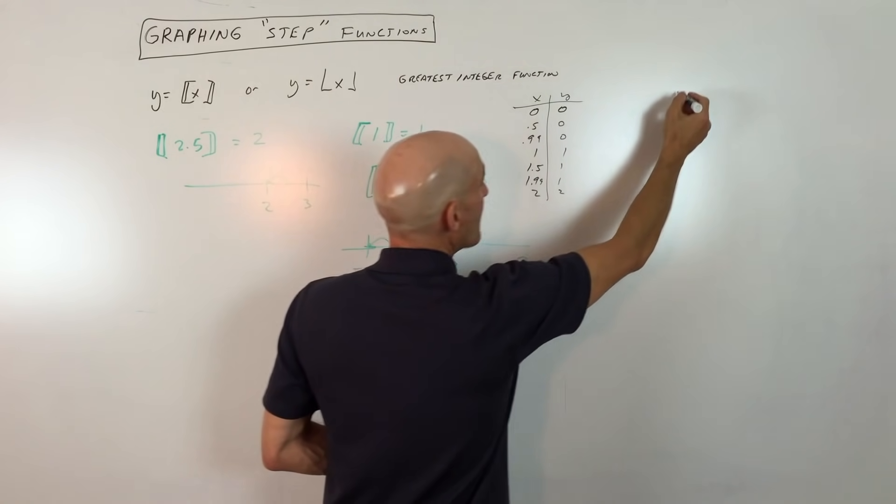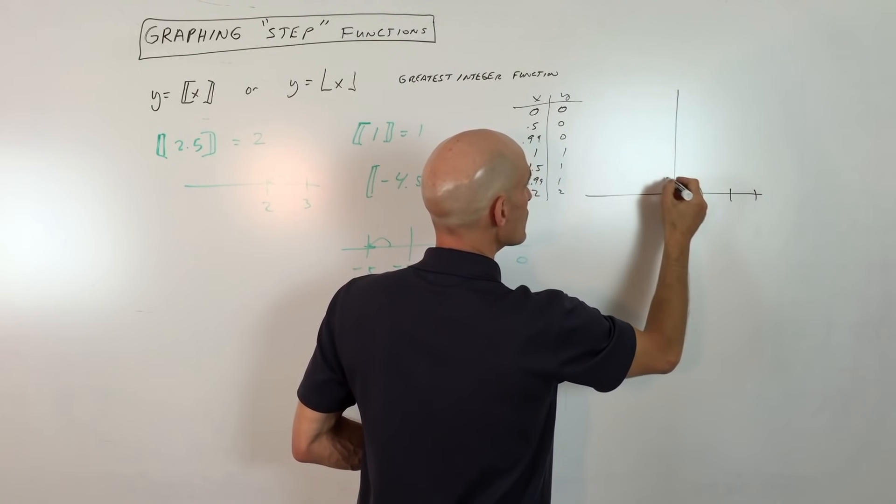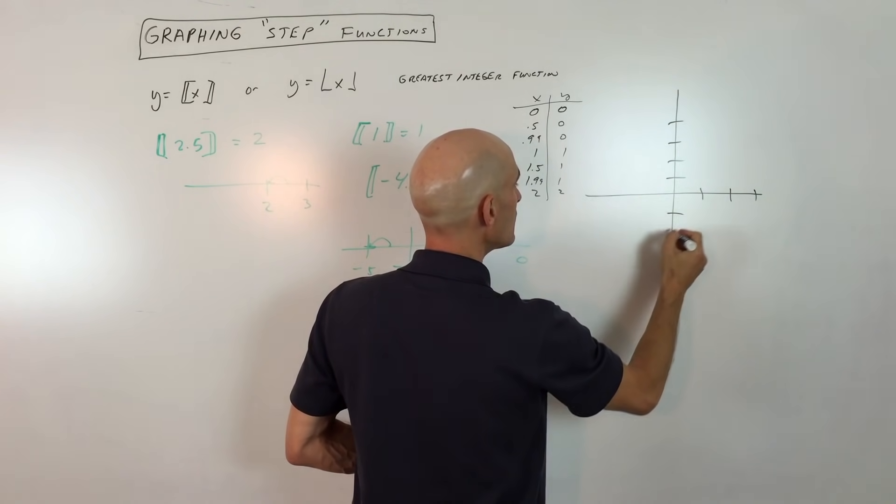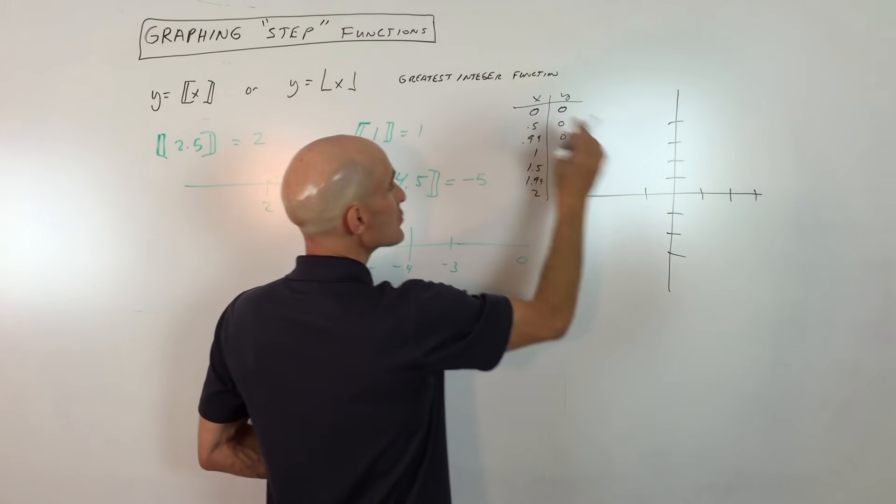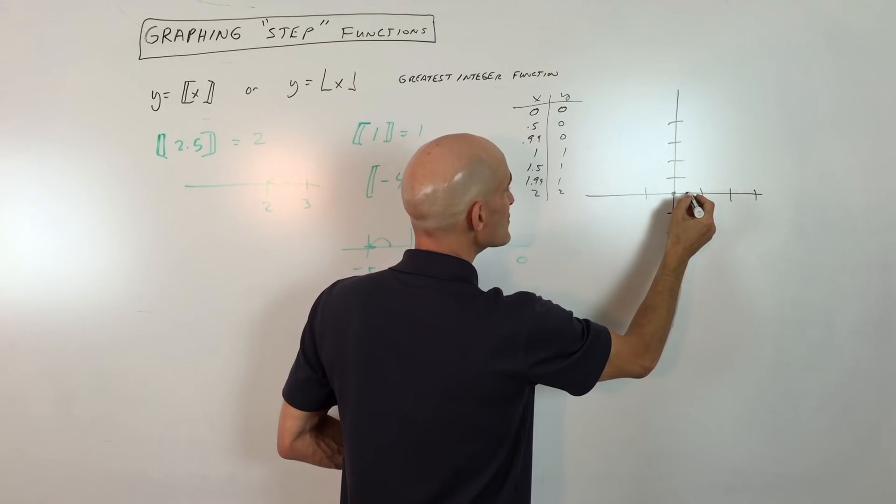So if we plot these points, let's see if we can draw this here. 1, 2, 3. You can see (0, 0), that's going to be right here. (0.5, 0) is going to be right here. (0.99, 0), that's 0.